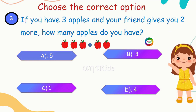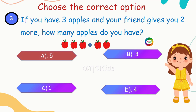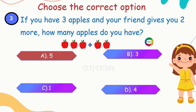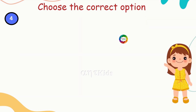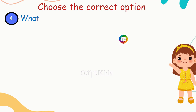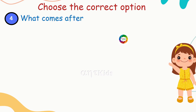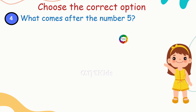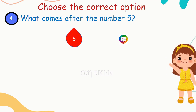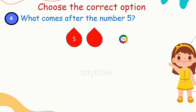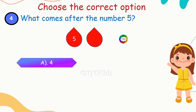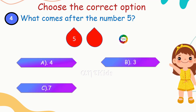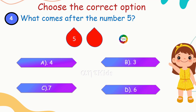Yes, you're right — five apples in total! Next question: what comes after the number five? Options are: 4, 3, 7, 6.